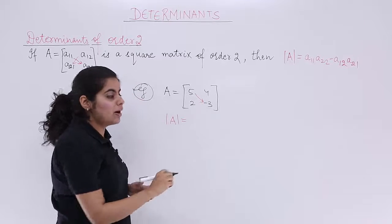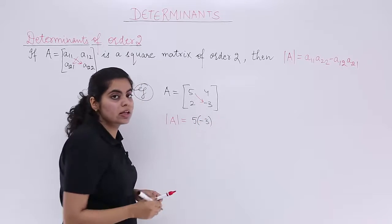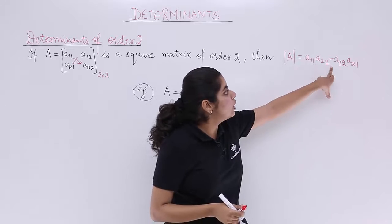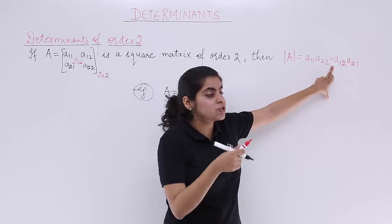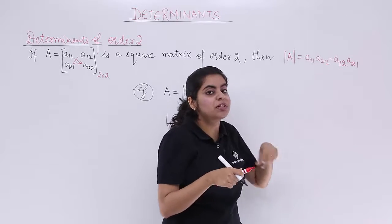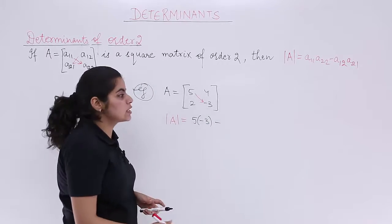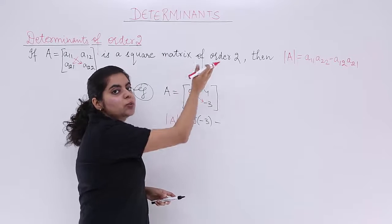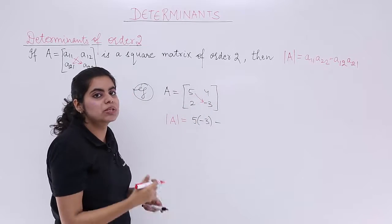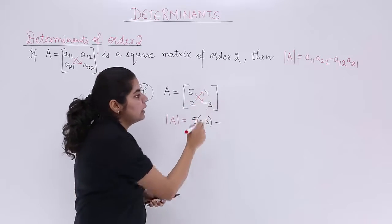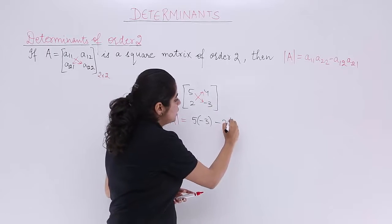We cross multiply. So it becomes 5 into minus 3. Next you have to always see that you have to substitute the values but first put the minus sign. So put the minus sign. Next cross multiply. Either go from 2 to 4, that means downwards to upwards or upwards to downwards. It's your wish. So you can go anyways. Suppose it is 2 into 4.